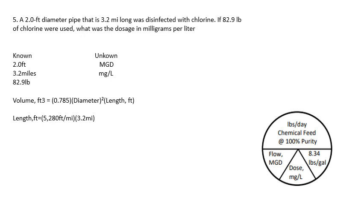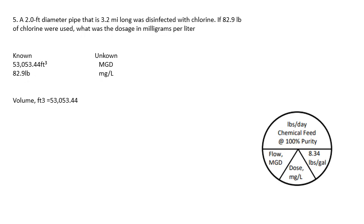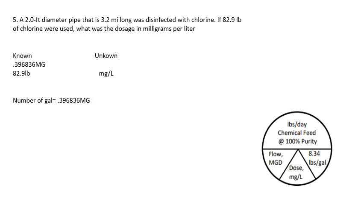Convert 3.2 miles to feet: 3.2 times 5,280 feet per mile gives the pipe length. The diameter is already 2 feet. The volume works out to 53,053.44 cubic feet. Convert to gallons: multiply by 7.48 gallons per cubic foot, which gives 396,836 gallons. Divide by 1,000,000 to get 0.396836 million gallons. Now we have our million gallons and our pounds.